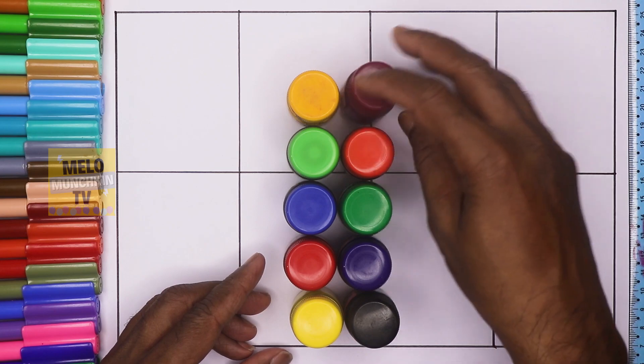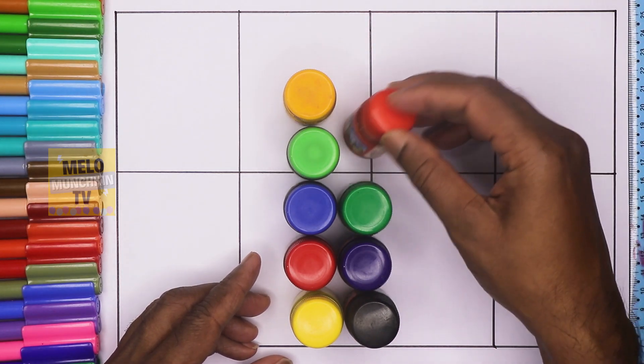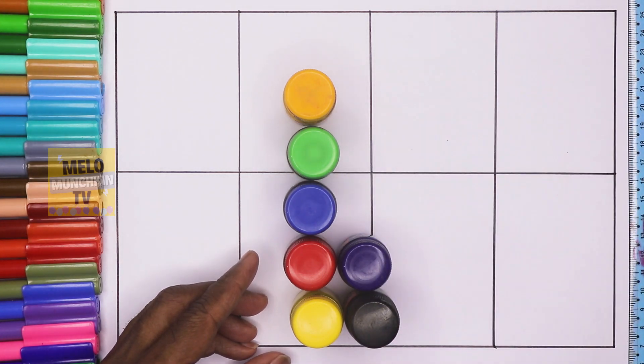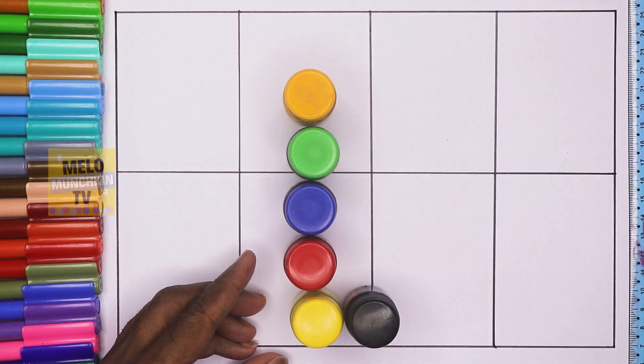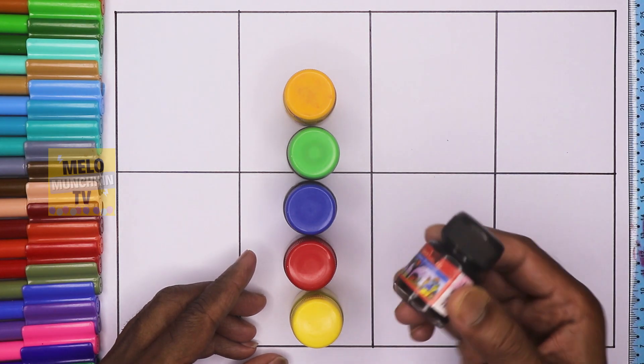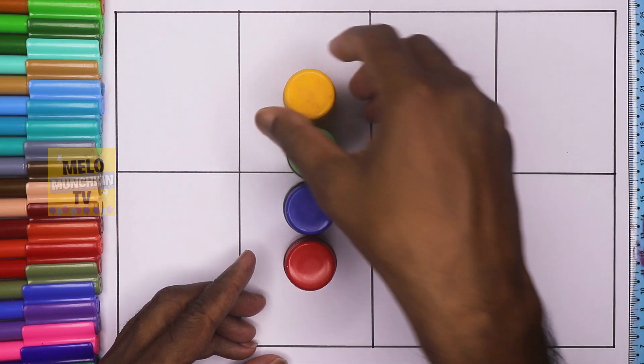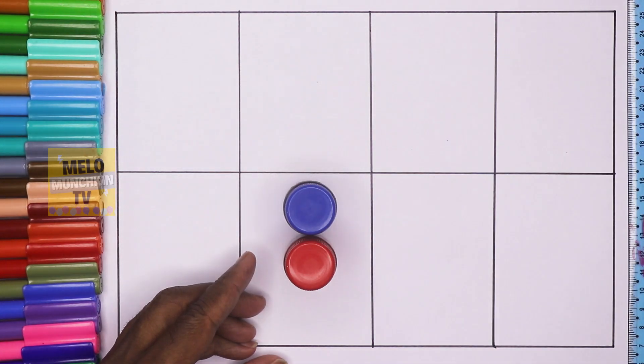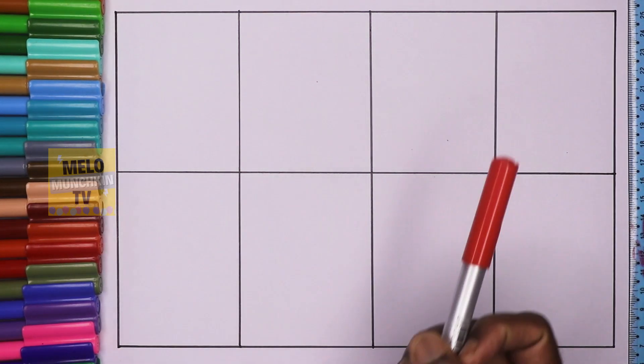Colors. This is magenta. This is orange. Dark green. Dark blue. Black. Lemon yellow. Chrome yellow. Light green. Blue color. Red color.